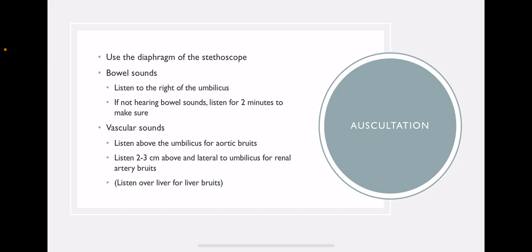With auscultation, we're going to use the diaphragm of the stethoscope—we're trying to pick up those high-pitched sounds, so use the wide shallow side of the stethoscope. We're listening for bowel sounds first. The best place to listen is just a few centimeters to the right of the umbilicus.